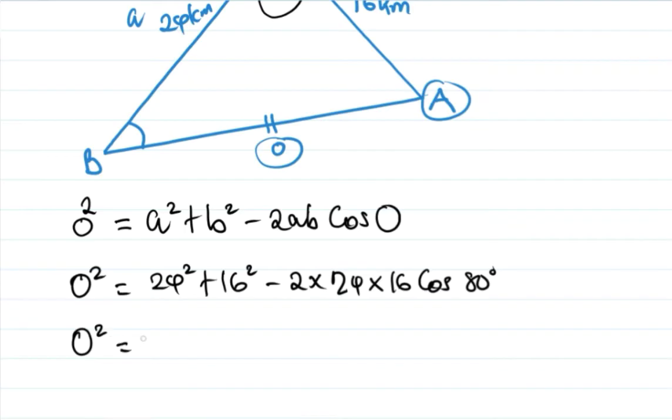We're going to have O square is 24 squared, according to my calculator, 24 squared is 576, then plus 16 squared should be 256, then minus 2 times 16 times 24.